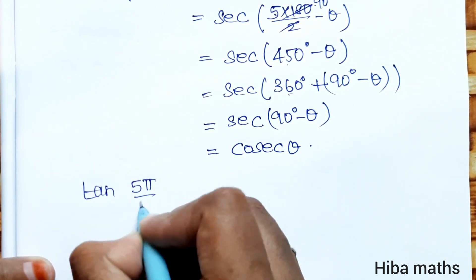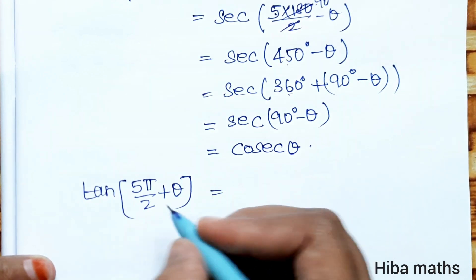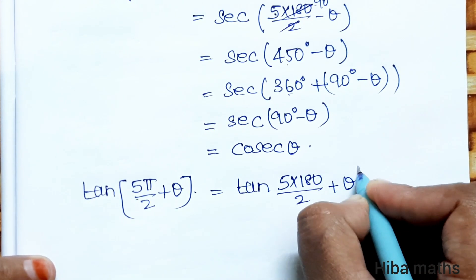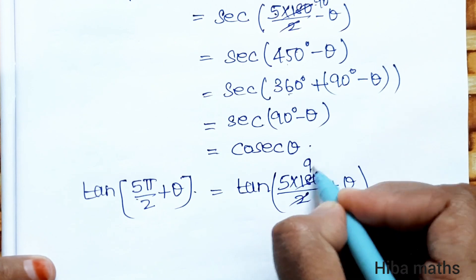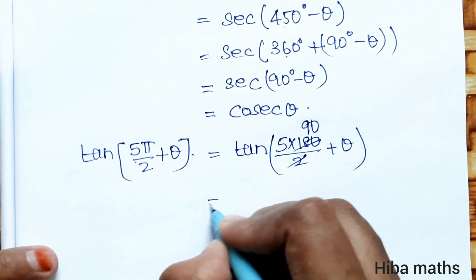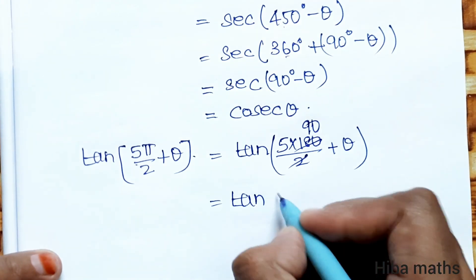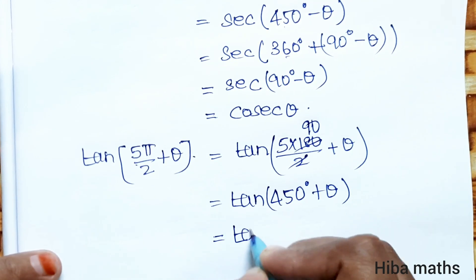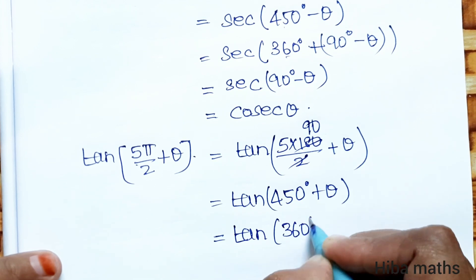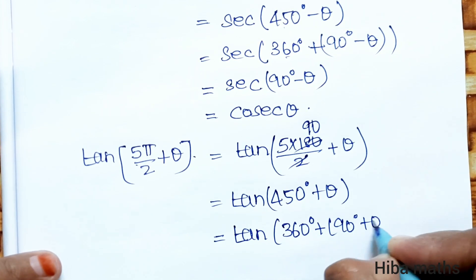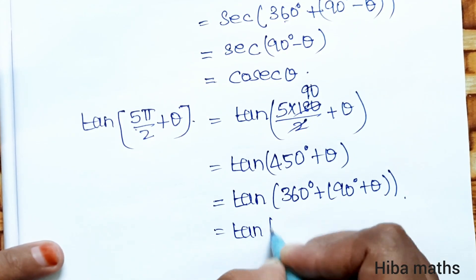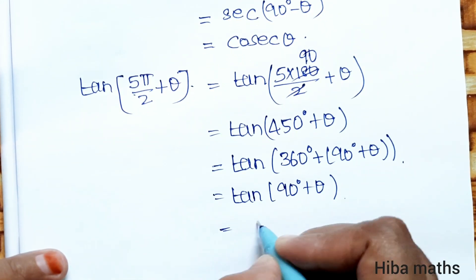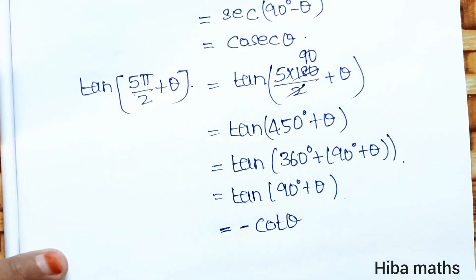Next, for tan(5π/2 + θ): substituting, 5 × 180 by 2 gives 450°. So we have tan(450° + θ). We write 450° as 360° + 90°, so it becomes tan(360° + 90° + θ). Since 360° drops out, we get tan(90° + θ), whose value is minus cot θ.